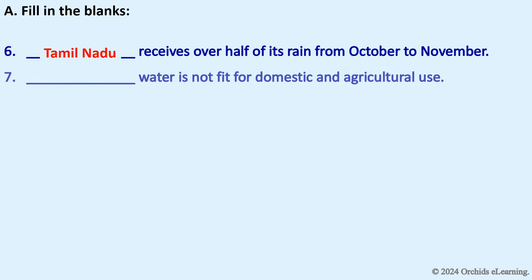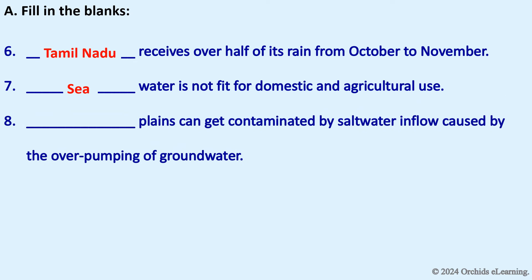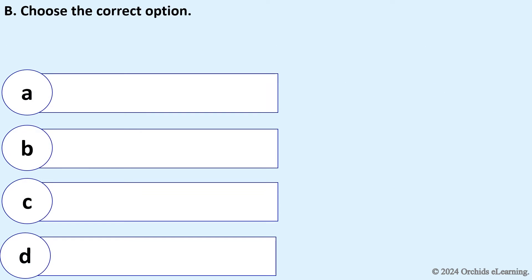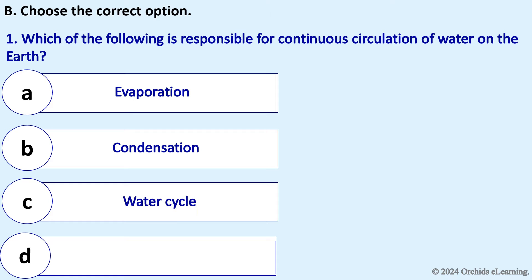Sea water is not fit for domestic and agricultural use. Coastal plains can get contaminated by saltwater inflow caused by the over-pumping of groundwater. Rainwater harvesting systems help in conservation of water.